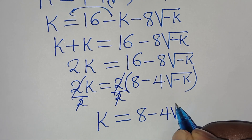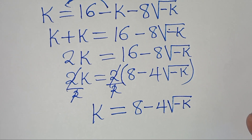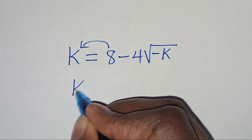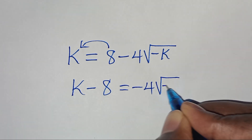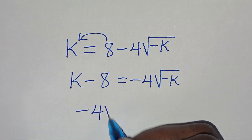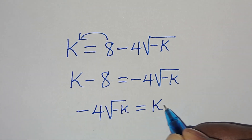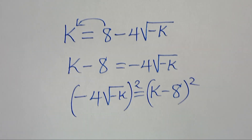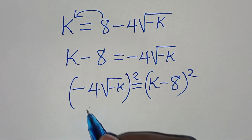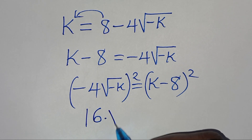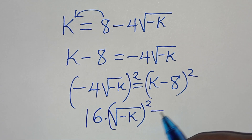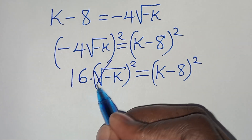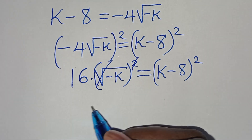Taking 8 to the left-hand side: k minus 8 equals minus 4 times the square root of minus k. We can rewrite this as minus 4 times the square root of minus k equals k minus 8. Now let's square both sides again to eliminate the remaining square root sign, so we have 16 times minus k — which is minus 16k — on the left, equal to (k minus 8) squared on the right.